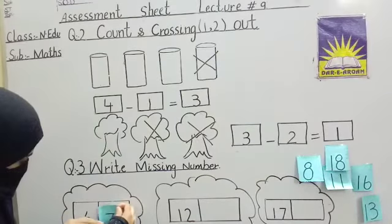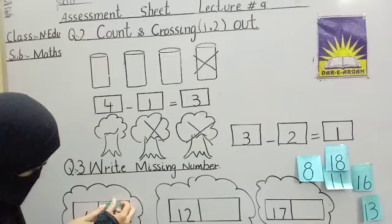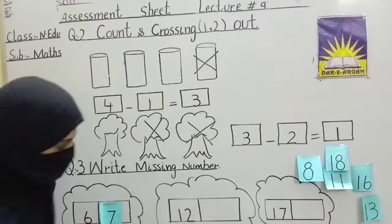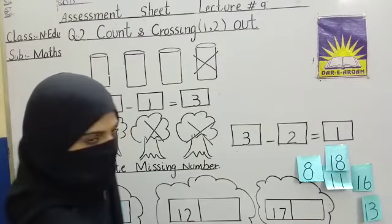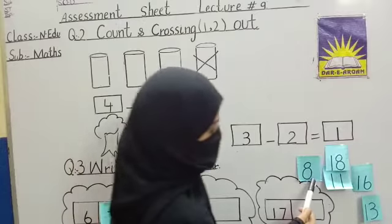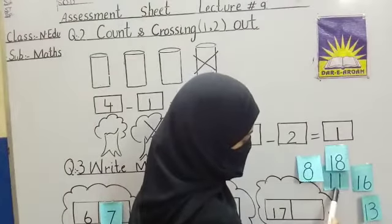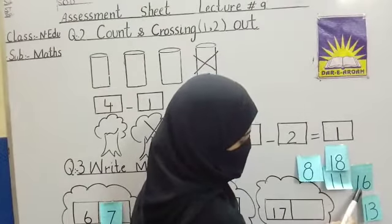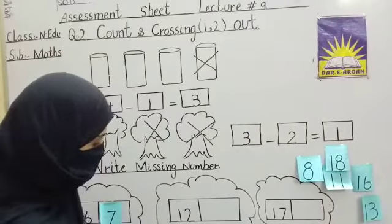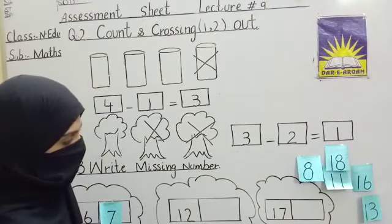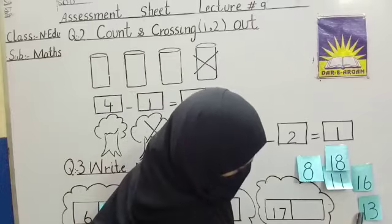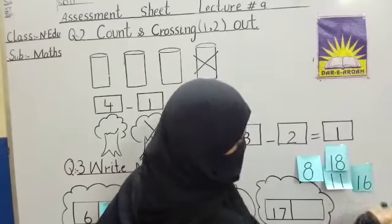6, 7. Next number hai hamaare paas 12 and missing number hama loog honne write karna hai. 12 ke baad kya aayega, pehle se dekh liethe hai: 8, 18, 11, 16, 13. 12 ke baad kaunt karein, 11, 12, yes, 13. Dekh 13 ye wala, yes. Isko ham loog utar lenge.